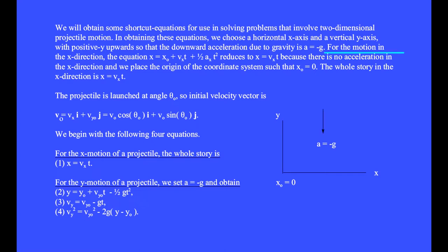For the motion in the x-direction, the equation x equals x₀ plus vₓt plus one-half aₓt squared reduces to x equals vₓt because there is no acceleration in the x-direction and we place the origin of the coordinate system such that x₀ equals 0. The whole story in the x-direction is x equals vₓ multiplied by t.